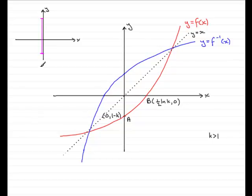then because you're reflecting that graph's range in the line y equals x, you get this point here going to there, that point going to there,